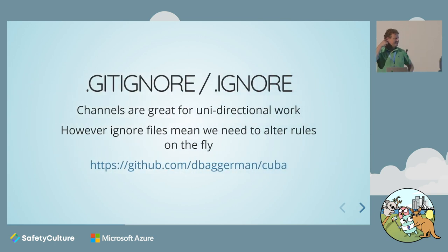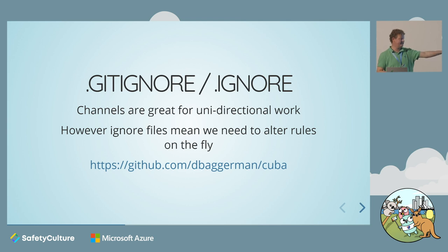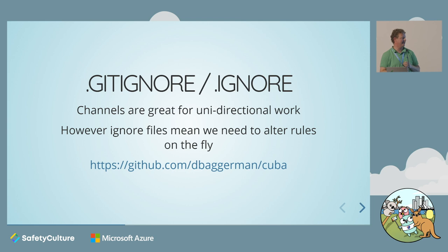The problem really existed with channels in this particular case. Channels are great for unidirectional work — they're not really good when you have cyclic stuff, which is what this falls into. A guy down in Melbourne, Dagavid Bagerman, who actually helped me a lot with SCC, wrote a particular tool just to solve this problem called Kuba. I'd suggest going to look it out and giving him a GitHub star — he's a great guy and he only has four stars, and I'd like to see that go up.